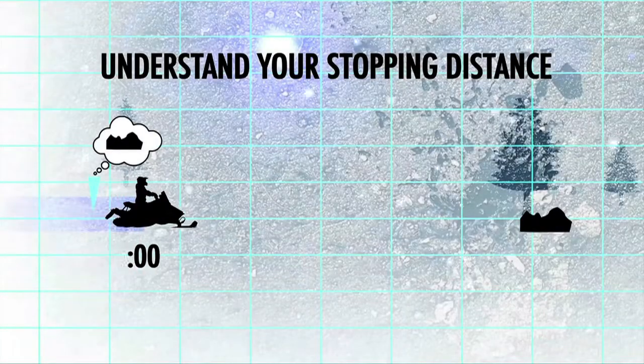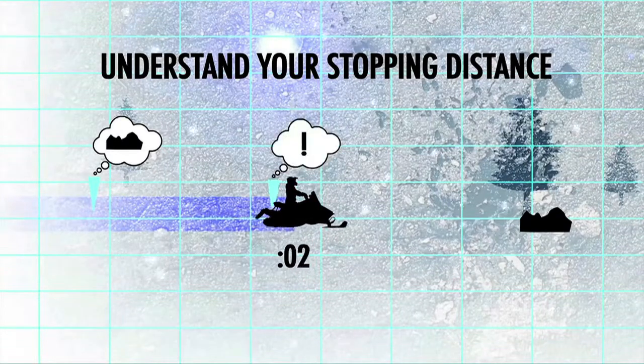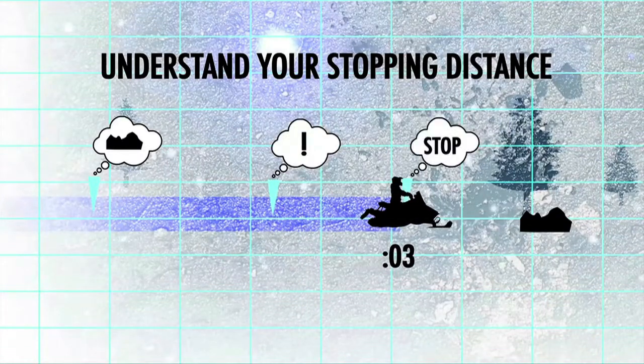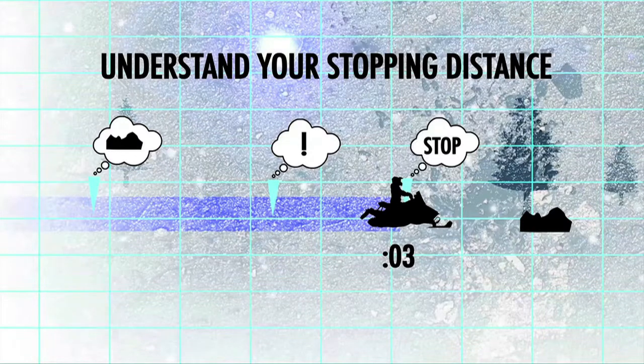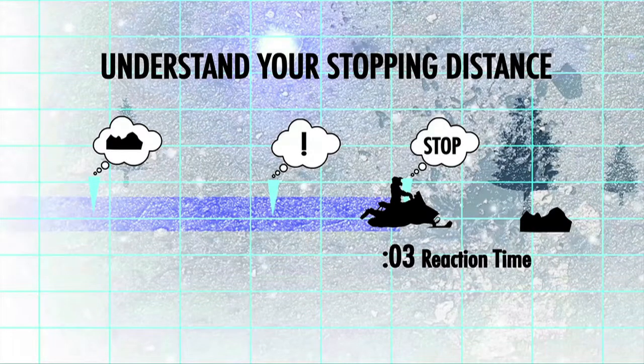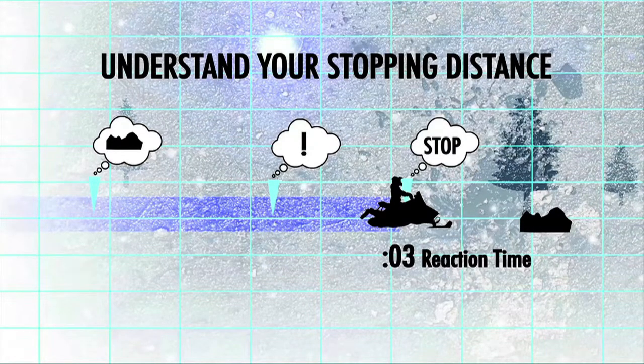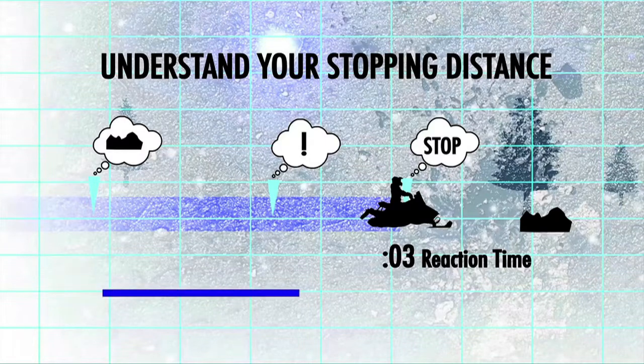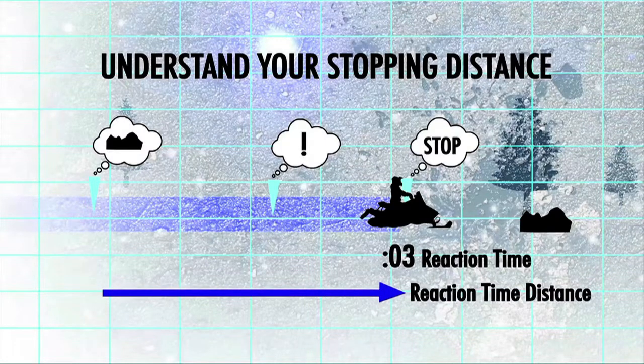Once you see an object, it takes a certain amount of time to identify that object as a hazard and decide how to react. That time is called reaction time, and for most people, it's about three seconds. The distance you travel in that time is called reaction time distance.